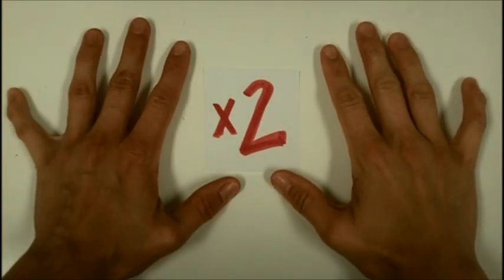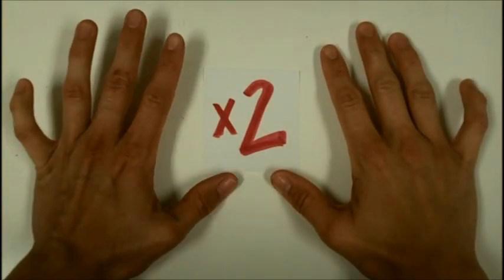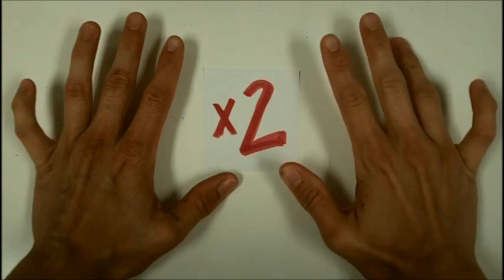Count by twos. Ready? Go. 2, 4, 6, 8, 10, 12, 14, 16, 18, 20.